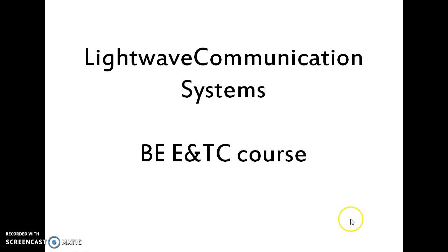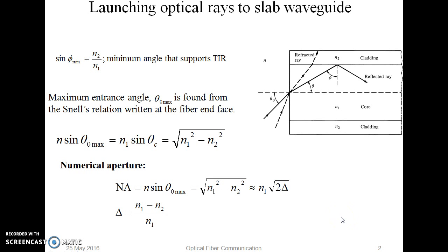Hello everyone, today we are going to see lightweight communication system numerical aperture calculation. Previously we have seen what is numerical aperture and how to calculate its value using the refractive indices of core and cladding. NA is equal to square root of n1 square minus n2 square, where n1 is the refractive index of core and n2 is refractive index of cladding.